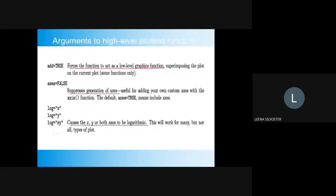Arguments to high-level plotting functions include: add=TRUE, which forces the function to act as a low-level graphics function; axes=FALSE, which suppresses generation of axes; log='x', log='y', or log='xy', which causes the x, y, or both axes to be logarithmic. The type argument controls plot style: type='p' plots individual points, type='l' plots lines, type='b' plots points connected by lines, type='o' overlays points with lines, type='h' plots vertical lines from points, type='s' gives a step function plot, and type='n' produces no plotting at all.